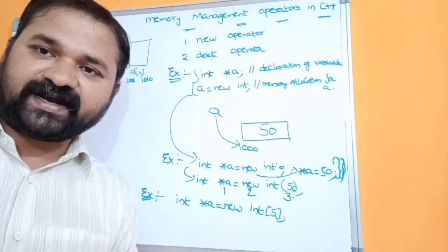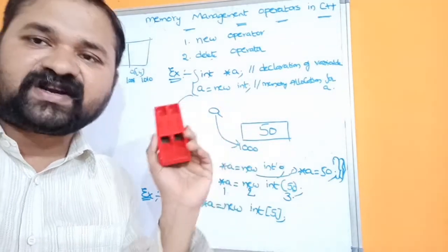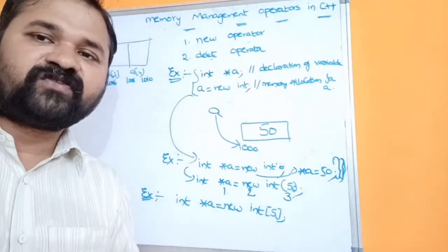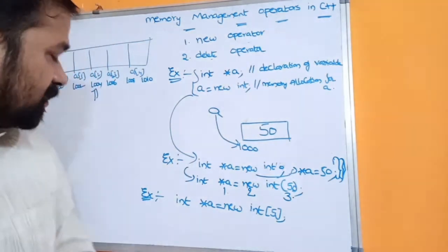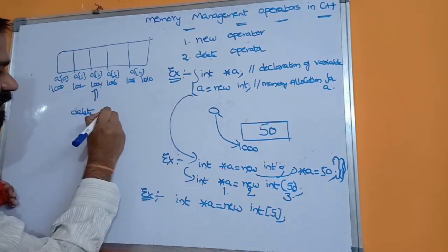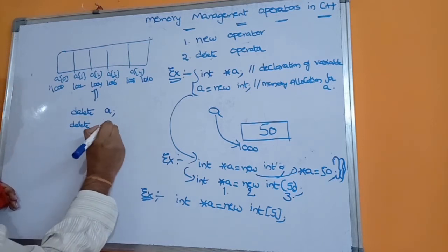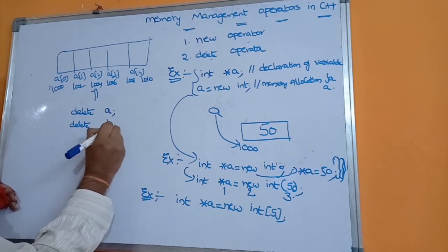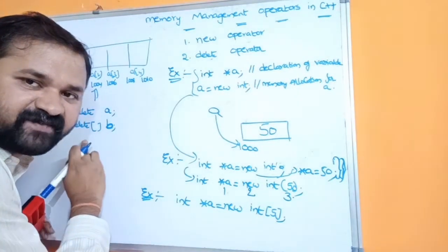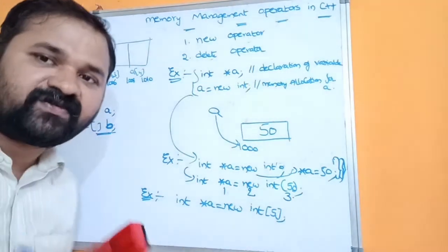Now let us see about the delete operator. Delete operator is useful to release or destroy the memory which was allocated for a variable, so that we can use that memory for some other variable. The syntax for delete: if it is a normal variable, we write delete a or delete b. If it is an array named b, we can write delete b or delete []b. When this statement is executed, the memory allocated for b will be destroyed.